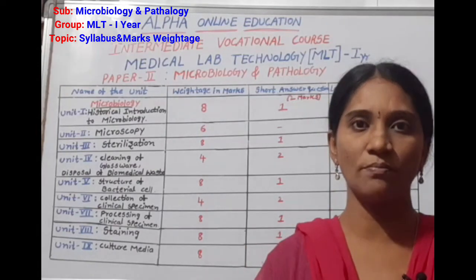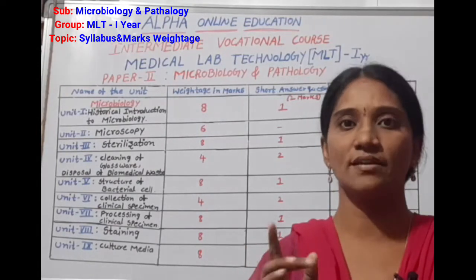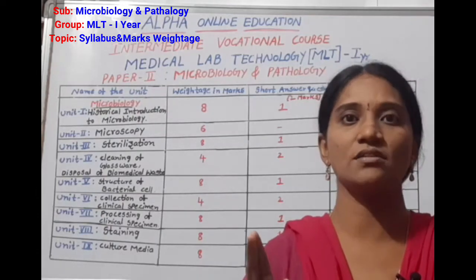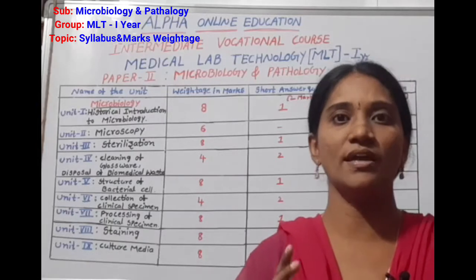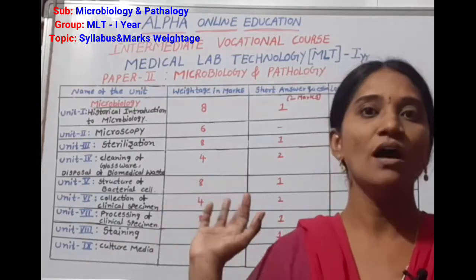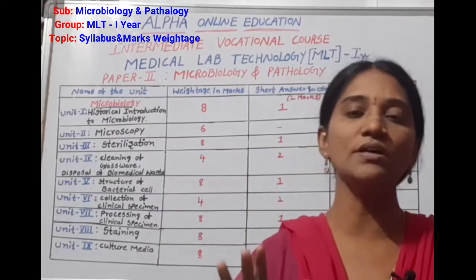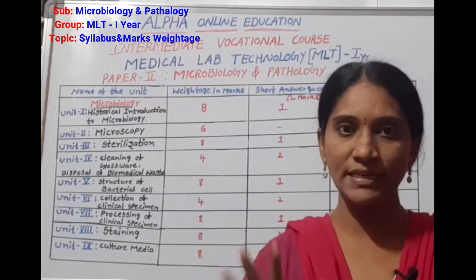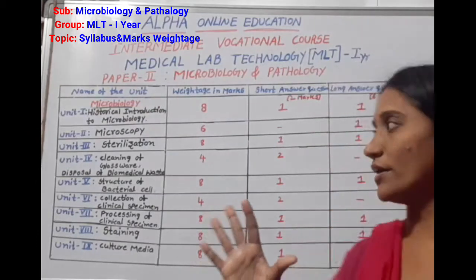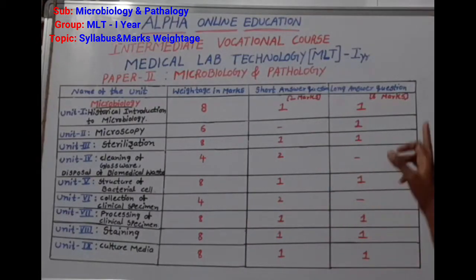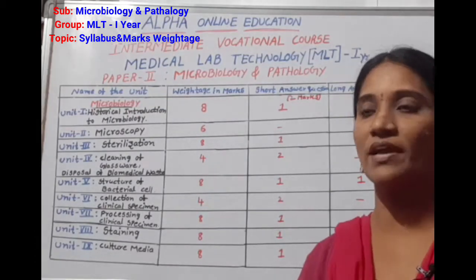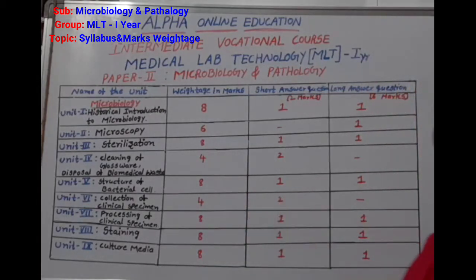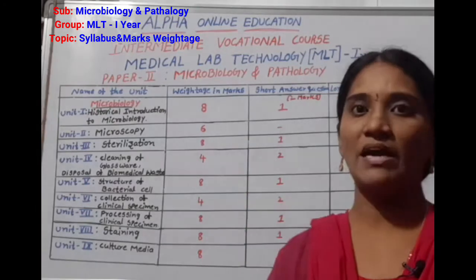Section A is short answer questions worth 2 marks each. There are 10 questions: 10 into 2 equals 20 marks. Section B is long answer questions. We attempt 5 long answers, each carrying 6 marks, totaling 30 marks. So long answers total 30 marks, short answers total 20 marks, and the paper total is 50 marks.